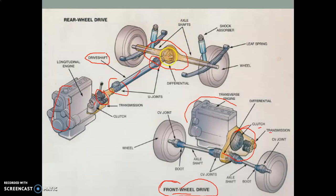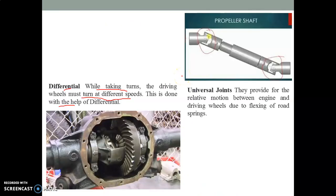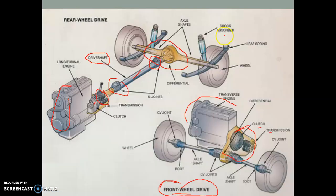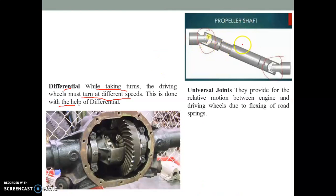This diagram shows the differential, which gives a proper turning motion to the wheels. Next is the propeller shaft, which is connected between the differential and the transmission system with the help of the universal joint. The propeller shaft provides for relative motion between the engine and driving wheel due to flexing of road springs. The universal joint is a joint which enables the drive shaft to transmit power at varied angles of speed.